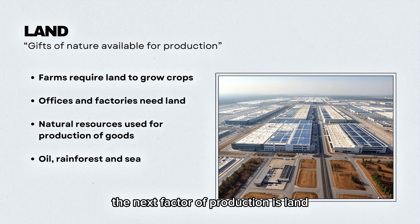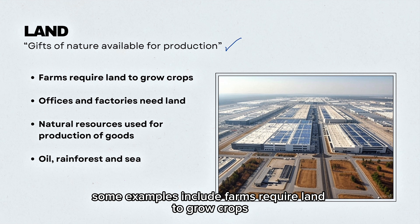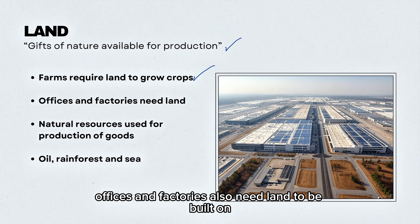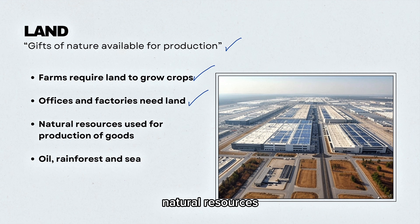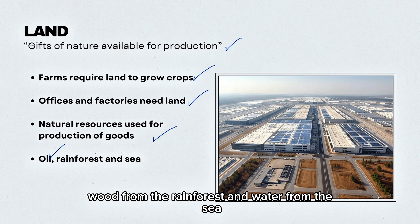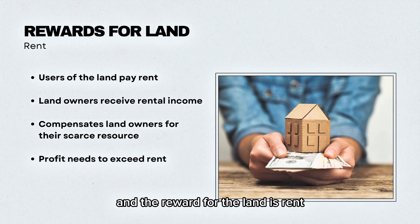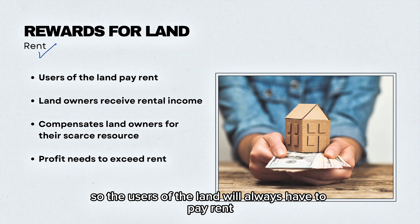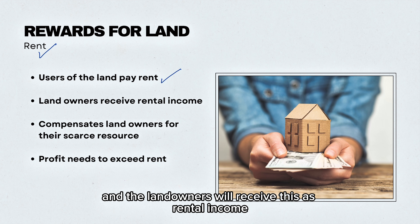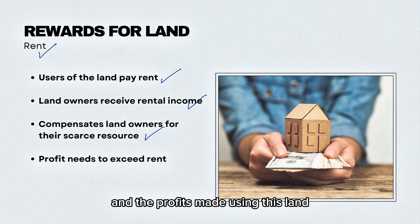The next factor of production is land — the gift of nature available for production. Examples include farms that require land to grow crops, offices and factories that need land to be built on, and natural resources used for production such as oil, wood from the rainforest, and water from the sea. The reward for land is rent, which landowners receive as rental income to compensate them for their scarce resource.